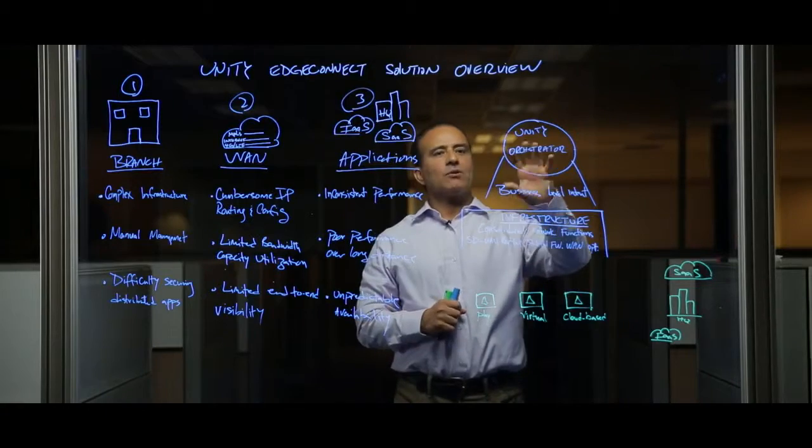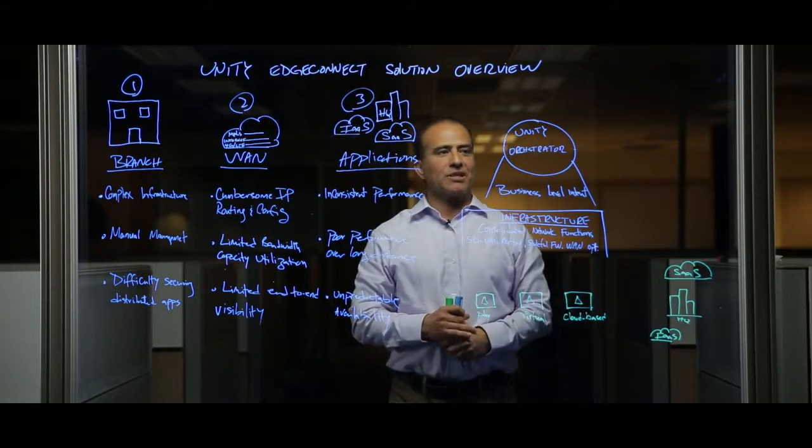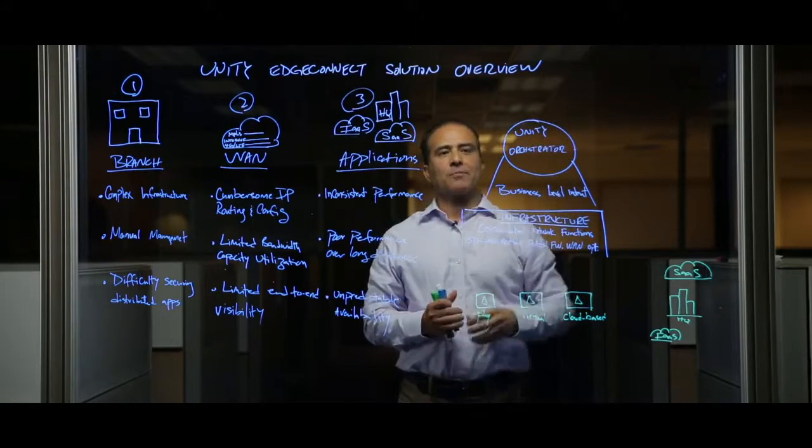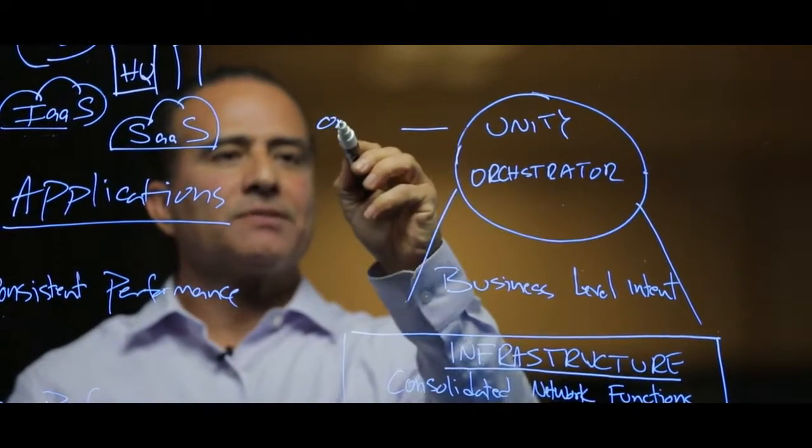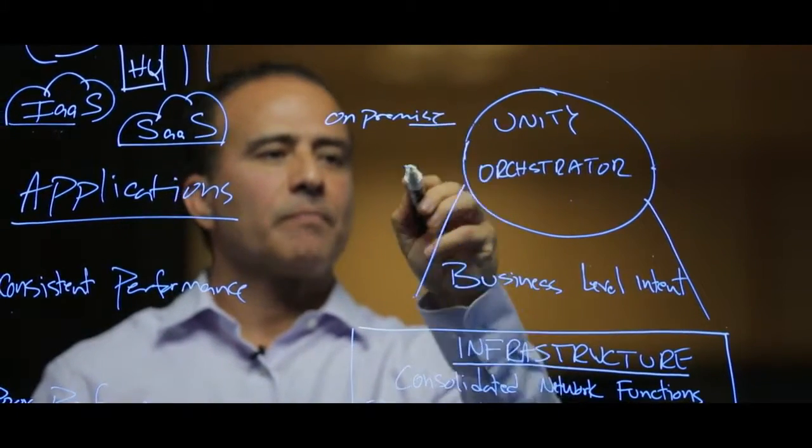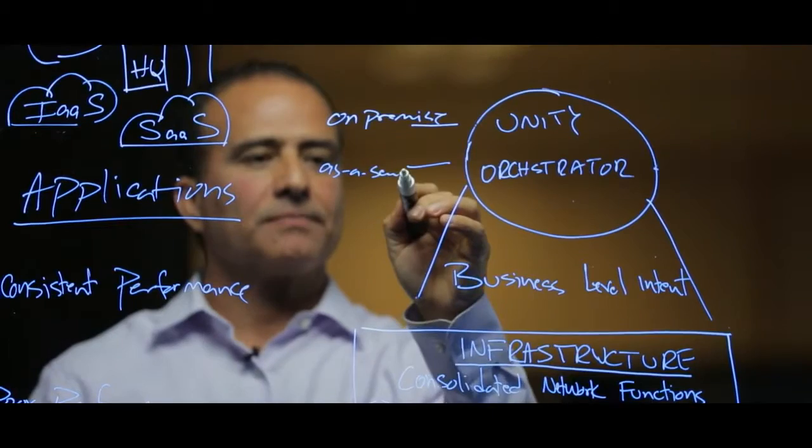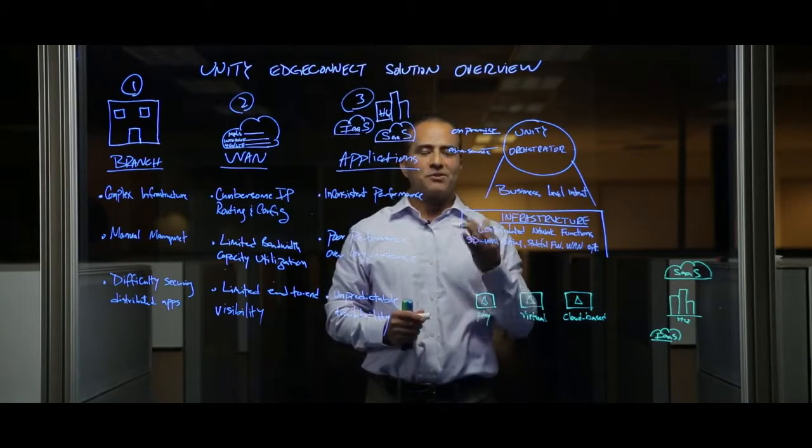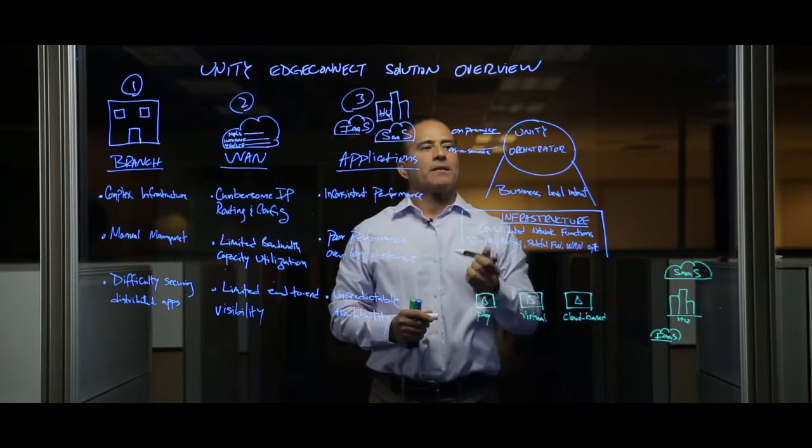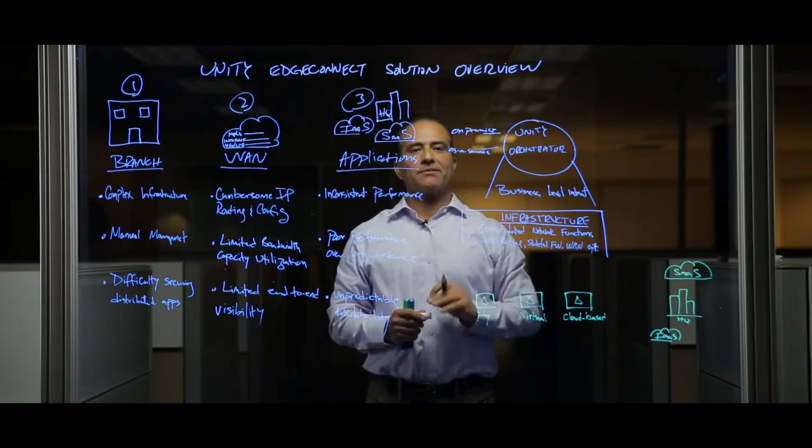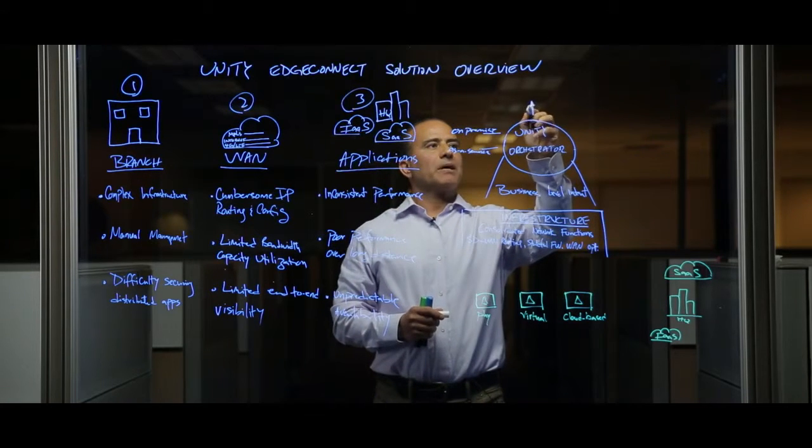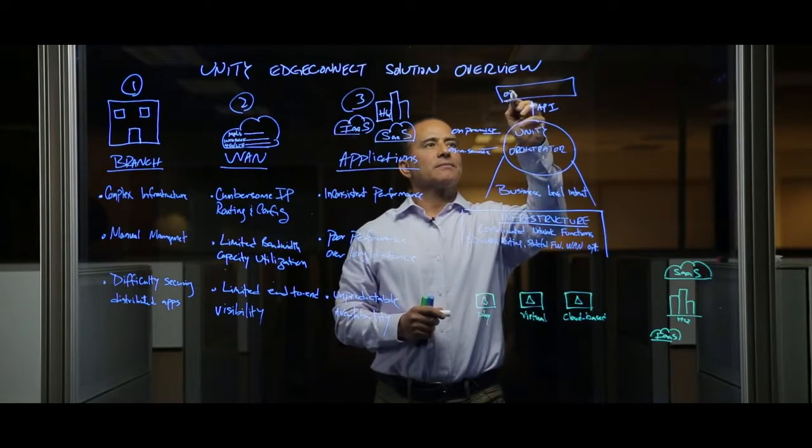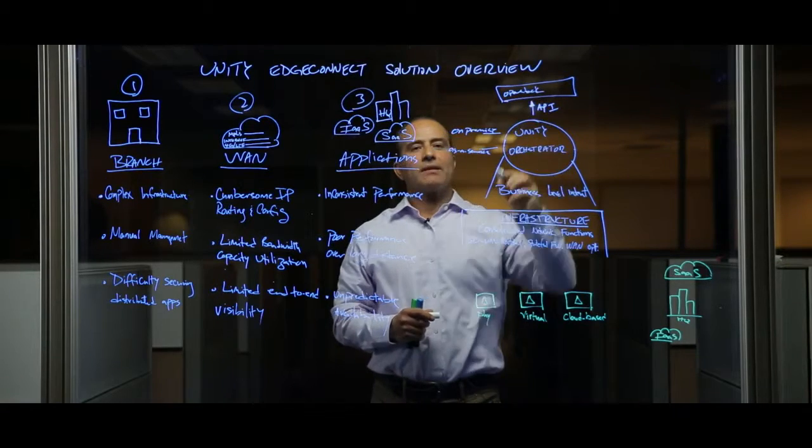The solution consists of two components, the Unity orchestrator and the devices that sit in the branch office. The Unity orchestrator is a centralized management single dashboard for deployments and ongoing operations. The Unity orchestrator can be deployed on-premise, or it can be deployed in the cloud as a service. The other thing about Unity orchestrator is the northbound API. Now they can connect with orchestrator tools like OpenStack, ADVA, and BluePlanet.